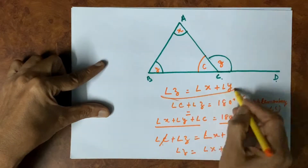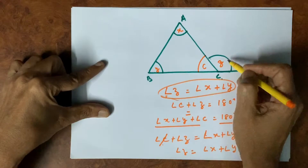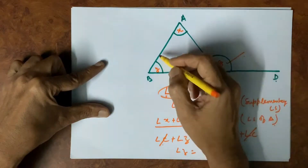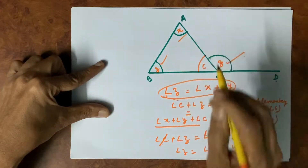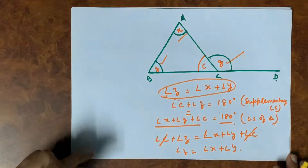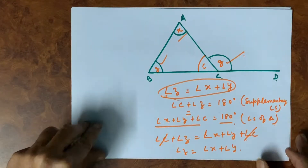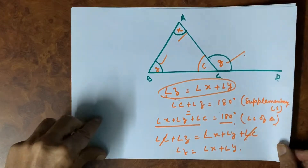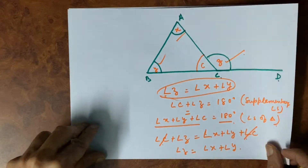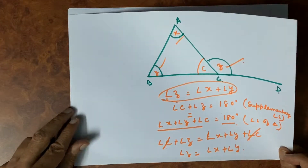Hence proved: the external angle of a triangle is equal to the sum of the two opposite interior angles. Now, based on these two theorems, we will try to solve some problems.